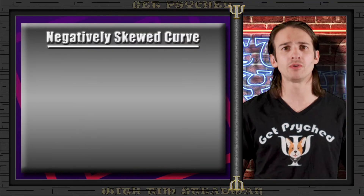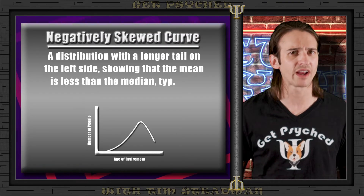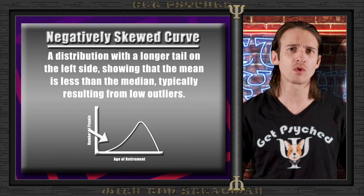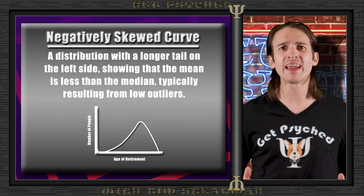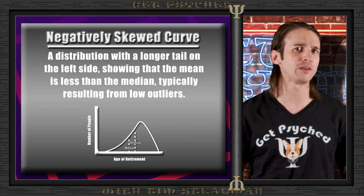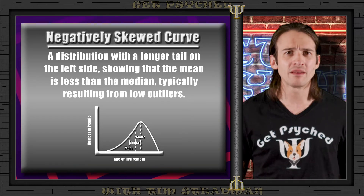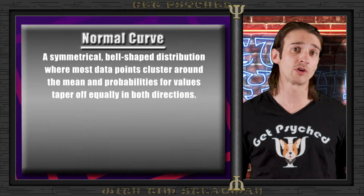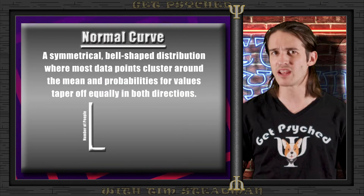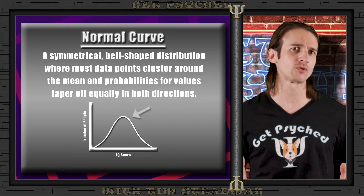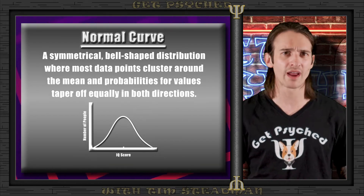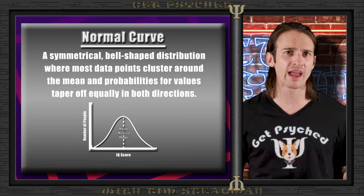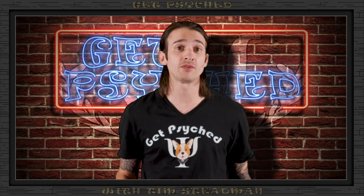On the flip side, negatively skewed curves are where data points are concentrated toward the higher end, and the tail extends toward the lower end, with the outliers on the left dragging down the mean more than the median or mode. So what happens when the mean, median, and mode are equal? Well, if that's the case, we have a normal curve — a bell-shaped distribution that represents a perfectly symmetrical spread of data points, with most values clustering around the mean and fewer occurring as you move away in either direction. A normal curve distribution is very important in psychology because many psychological traits such as IQ or standardized test scores tend to naturally follow this pattern.